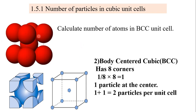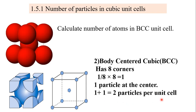For the body centered cubic unit cell, eight particles are at the corners — one, two, three, four, five, six, seven, and eight — and one particle is at the center of the cube. The corner particles contribute one-eighth each; one-eighth into eight equals one. The single center particle belongs entirely to this unit cell and is not shared by any neighboring cubes. Therefore, one plus one equals two particles per unit cell in a body centered cubic cell.